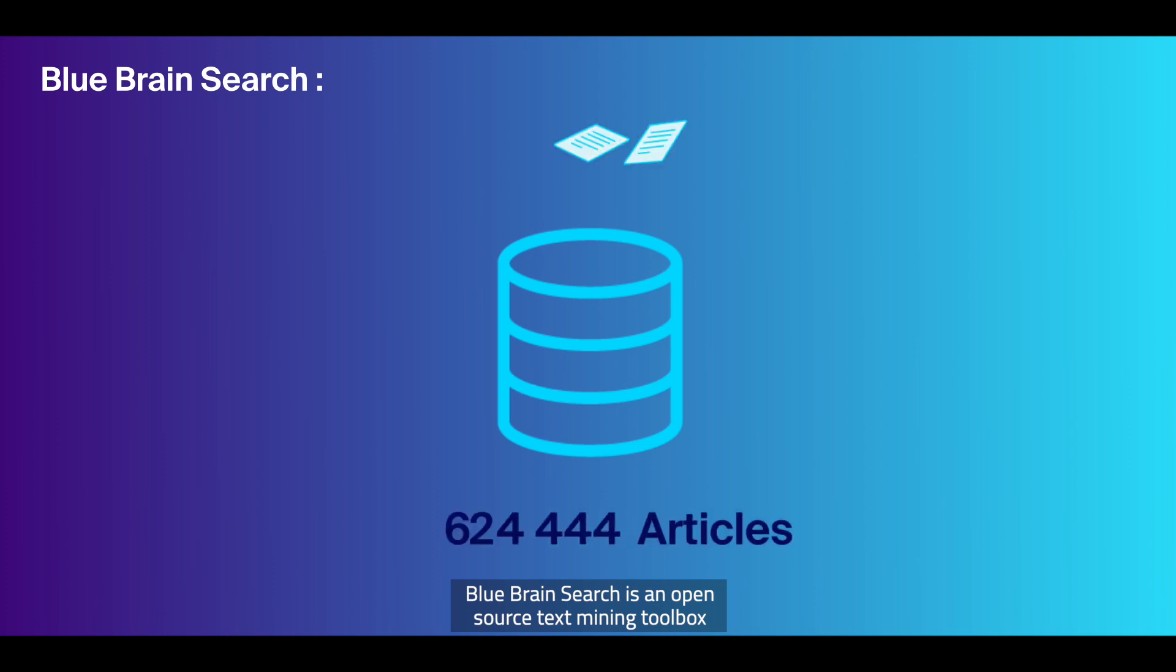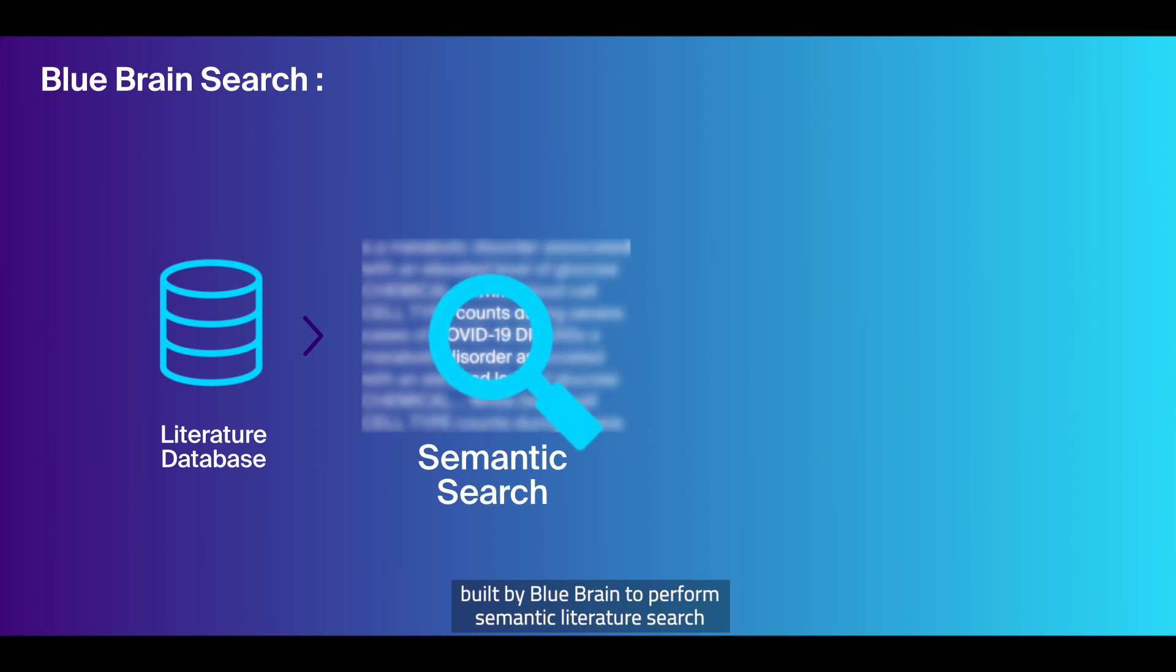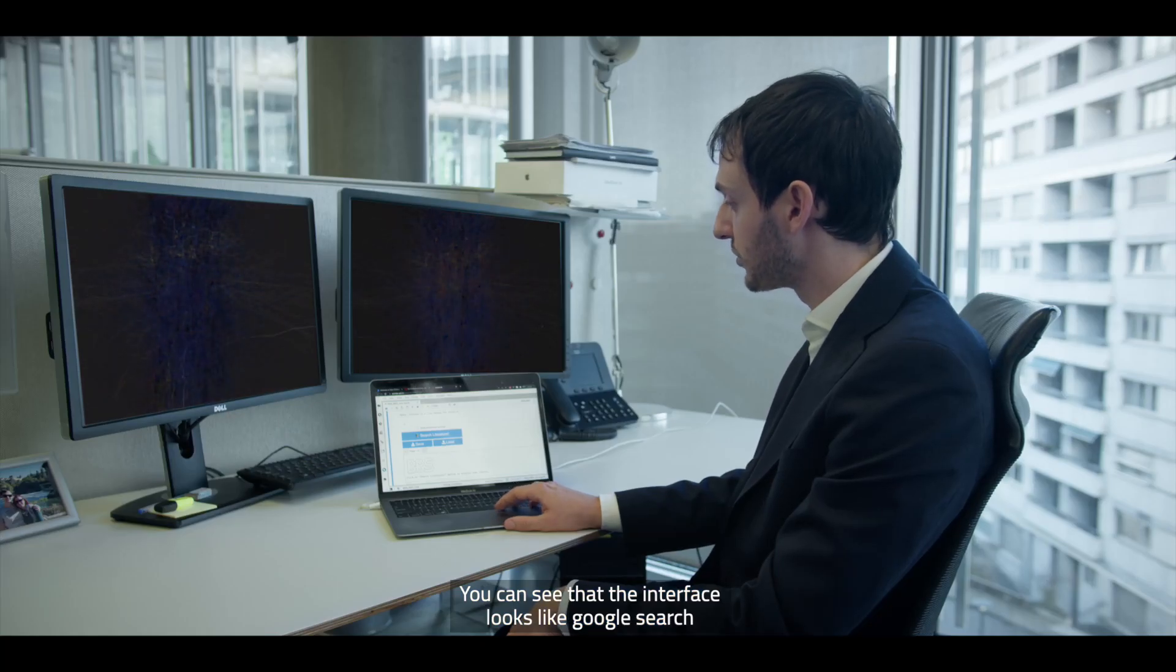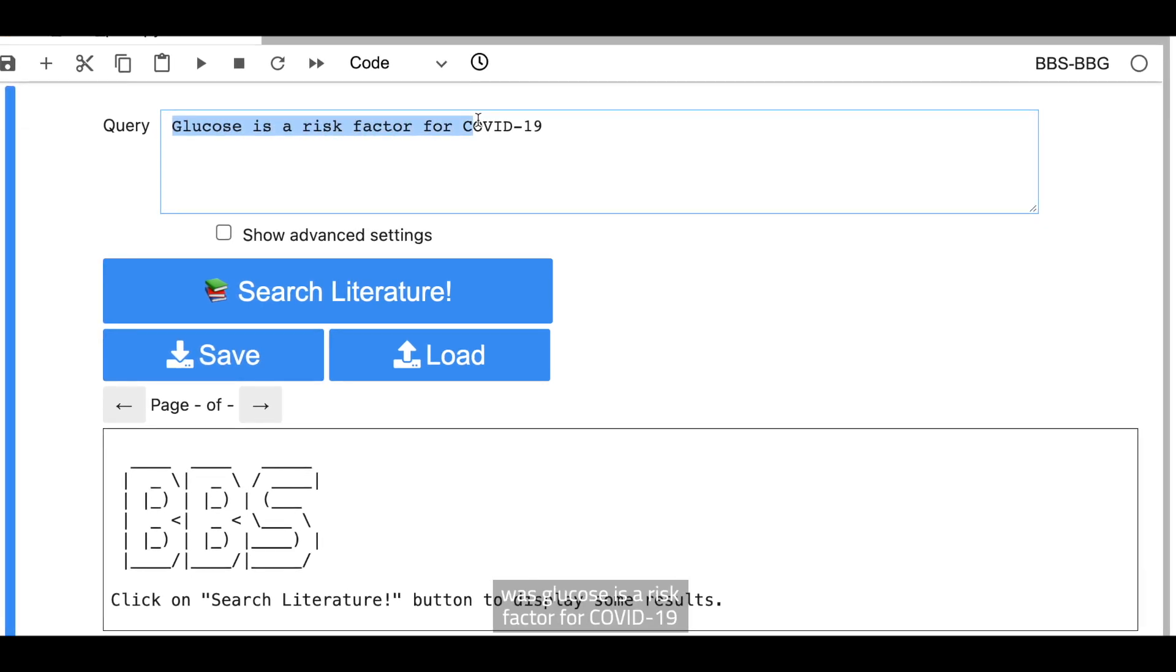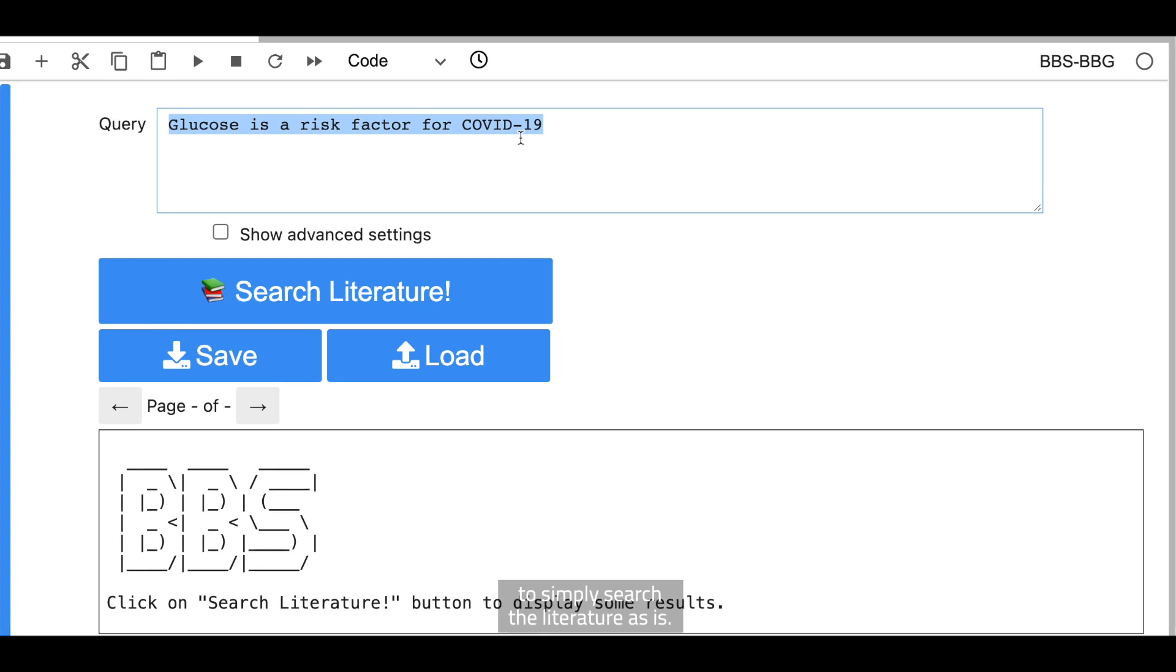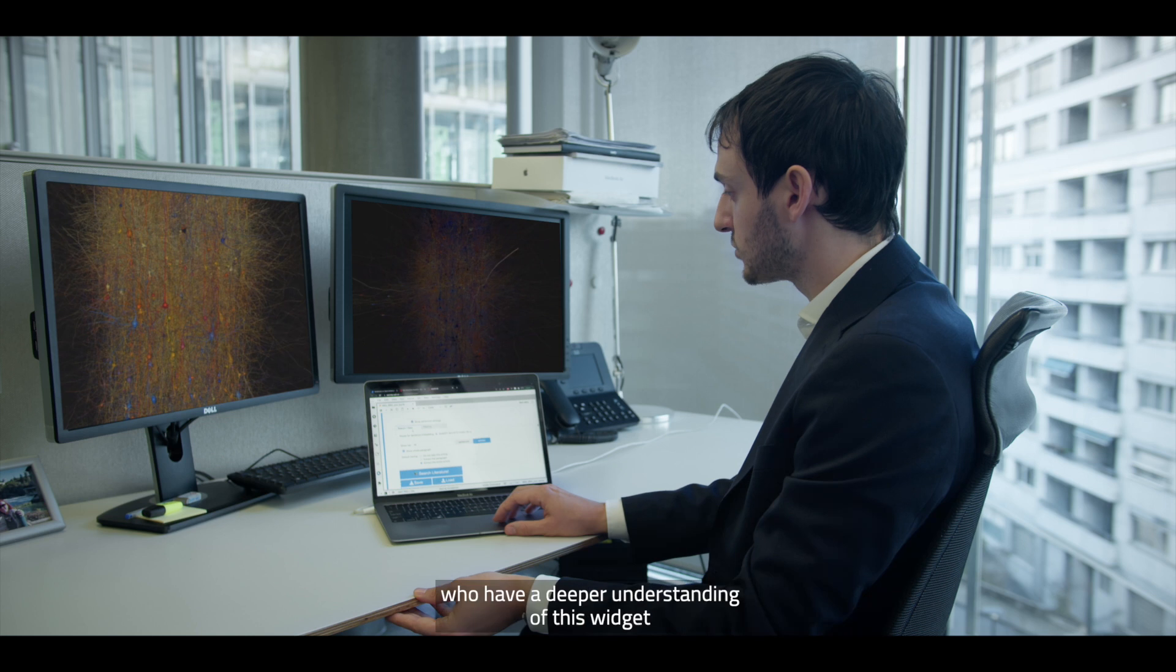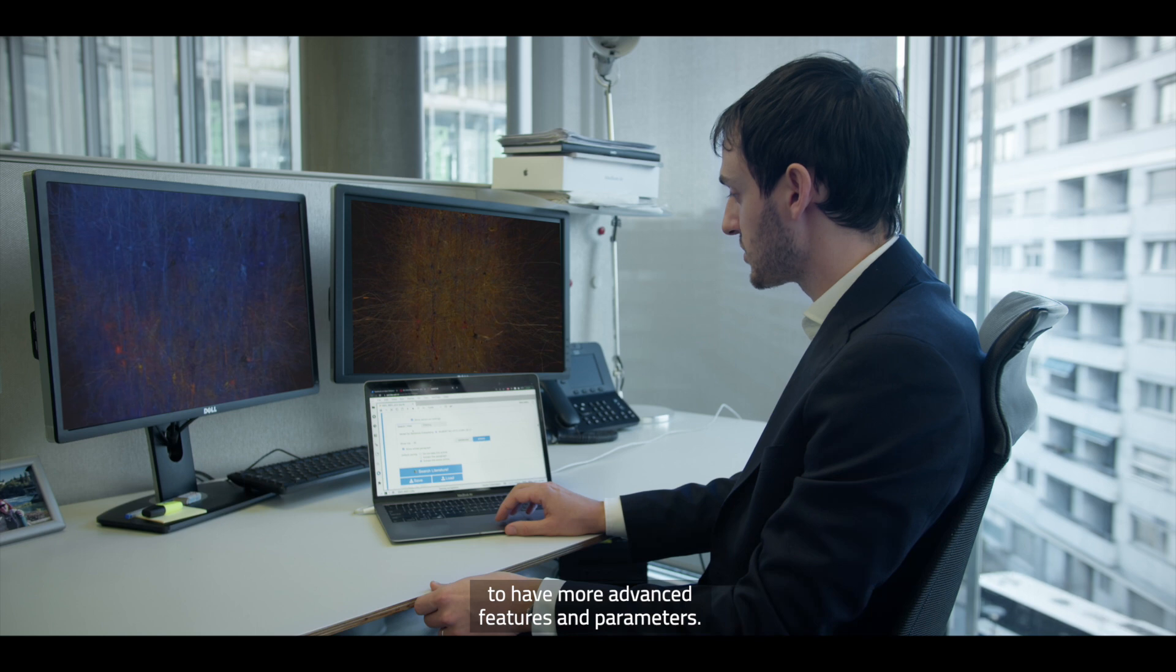BlueBrain Search is an open source text mining toolbox built by BlueBrain to perform semantic literature search and structured information extraction from text sources. You can see that the interface looks a bit like a Google search. So you have a query. For instance, in this case, for our paper was glucose as a risk factor for COVID-19, but you can write whatever you want. And then you have these basic features which allow you to simply search the literature as is. But we also enabled users and scientists who have a deeper understanding to have more advanced features and parameters.